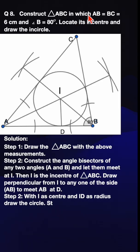Construct triangle ABC in which AB is equal to BC is equal to 6 centimeter and angle B is equal to 80 degrees. Locate its incenter and draw the incircle.